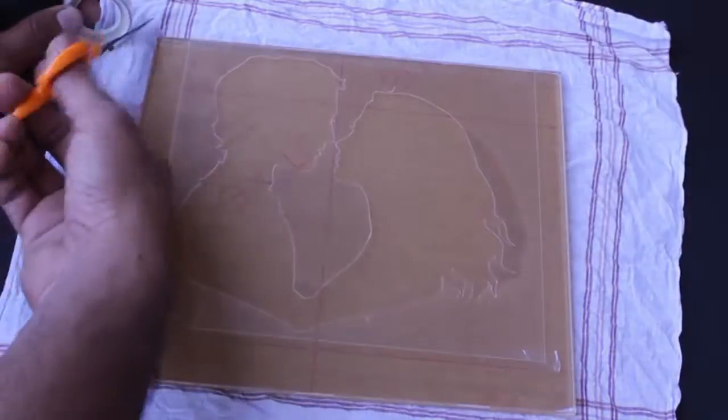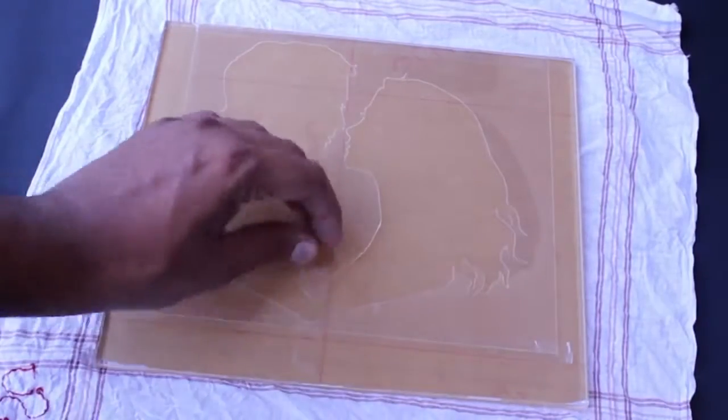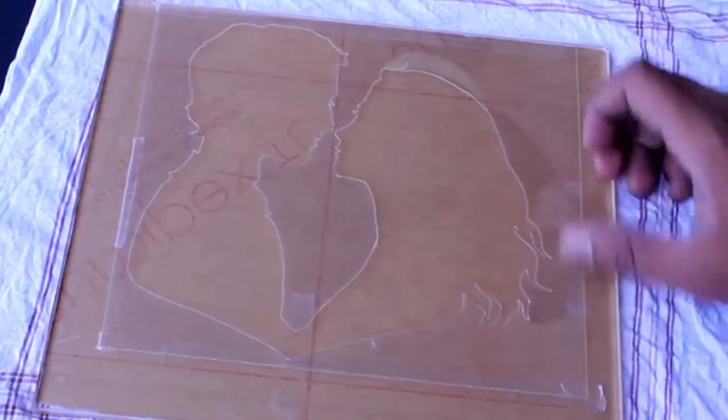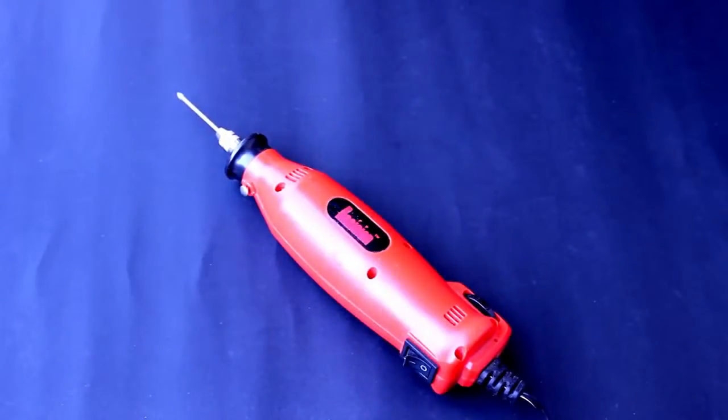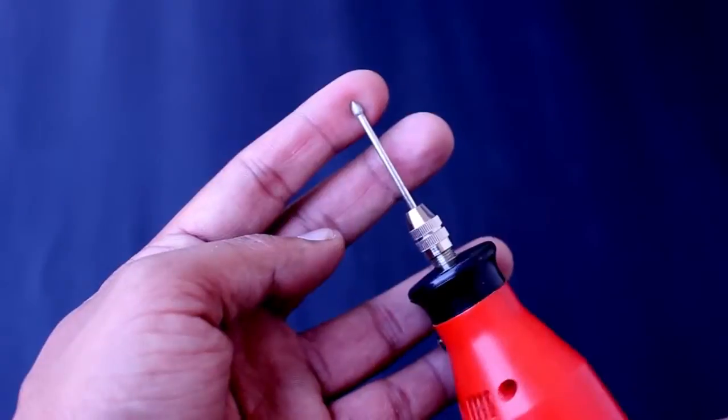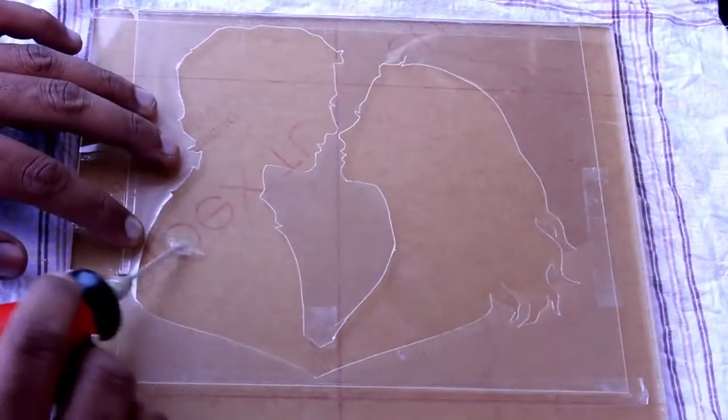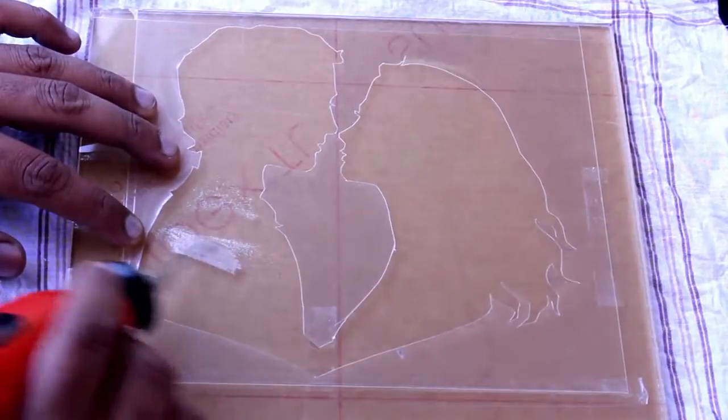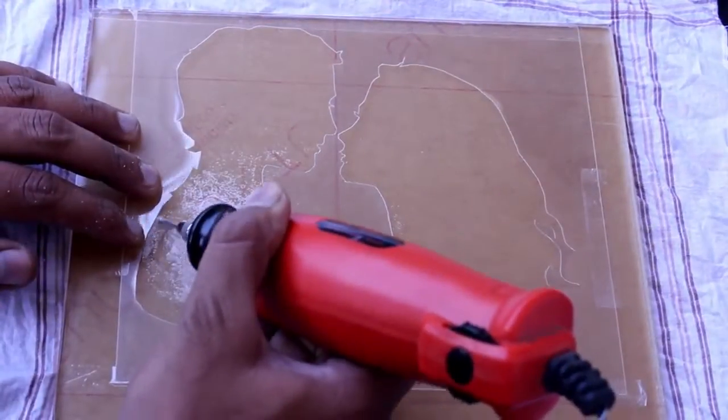Now using a mini drill grinder found in local stores, carve out the design. I prefer this 3mm grinder bit to carve out the stencil shape. While grinding, don't put over pressure or don't do over grinding, just do it softly. Be careful while carving at edges.